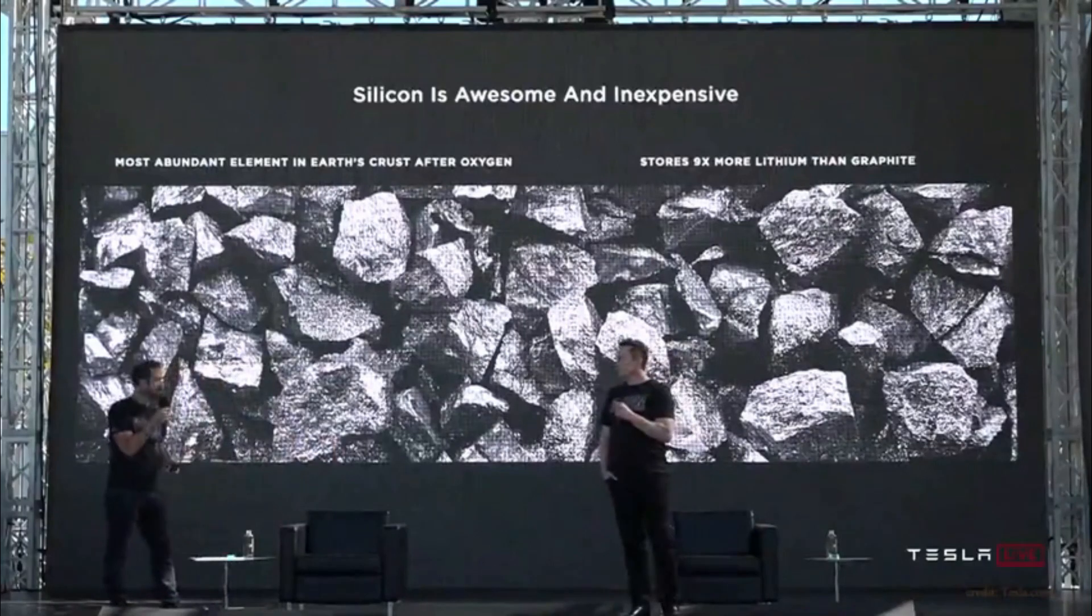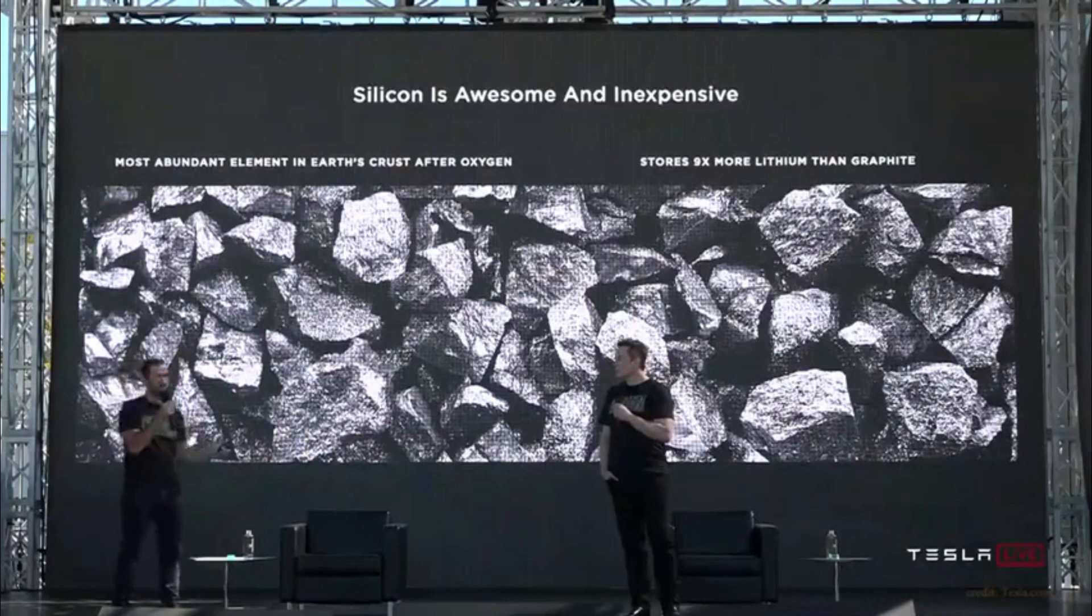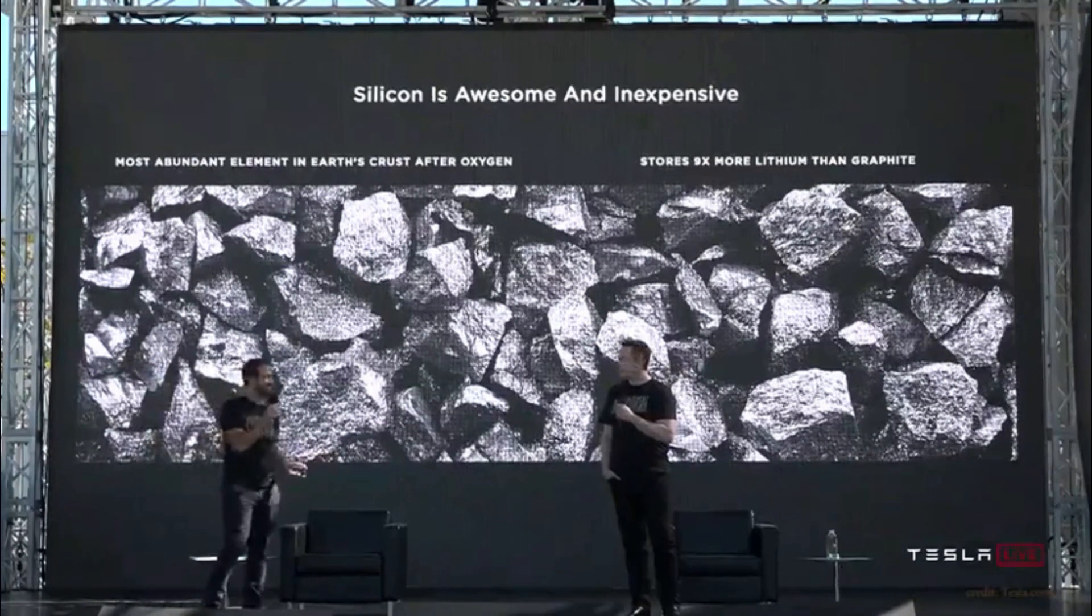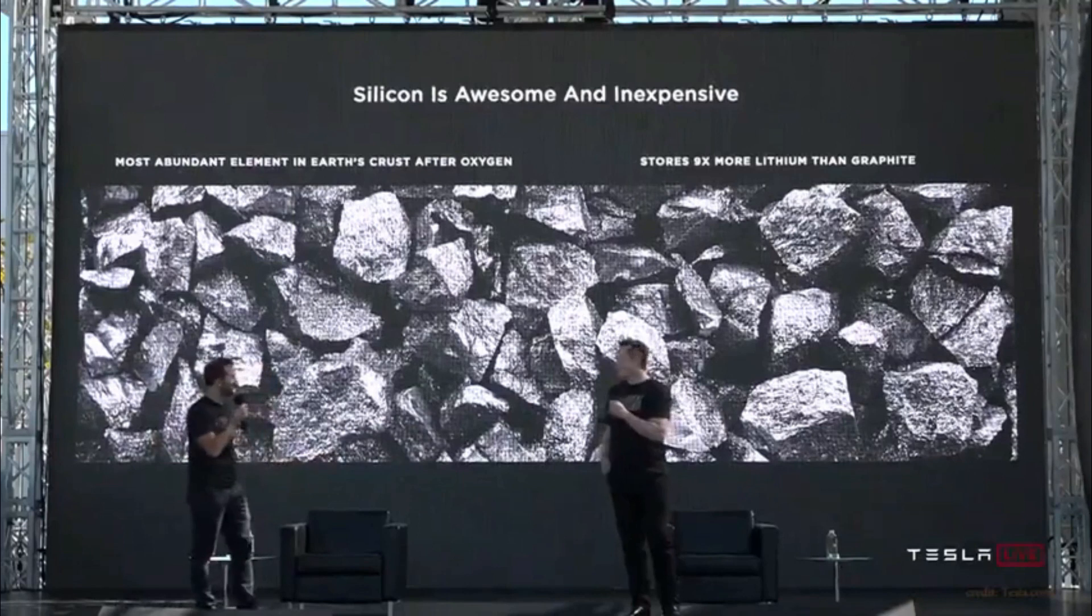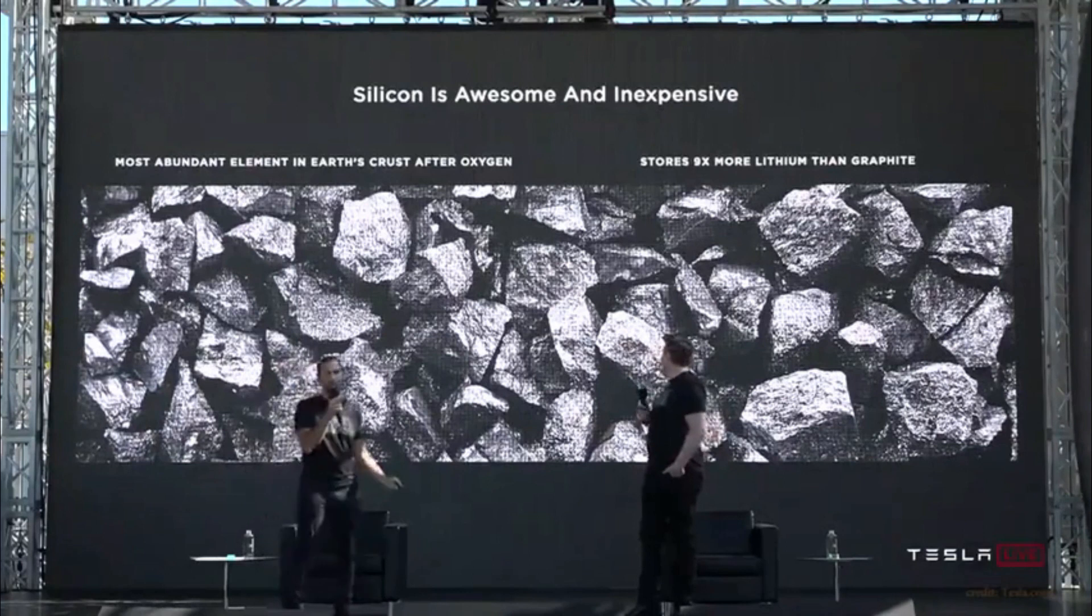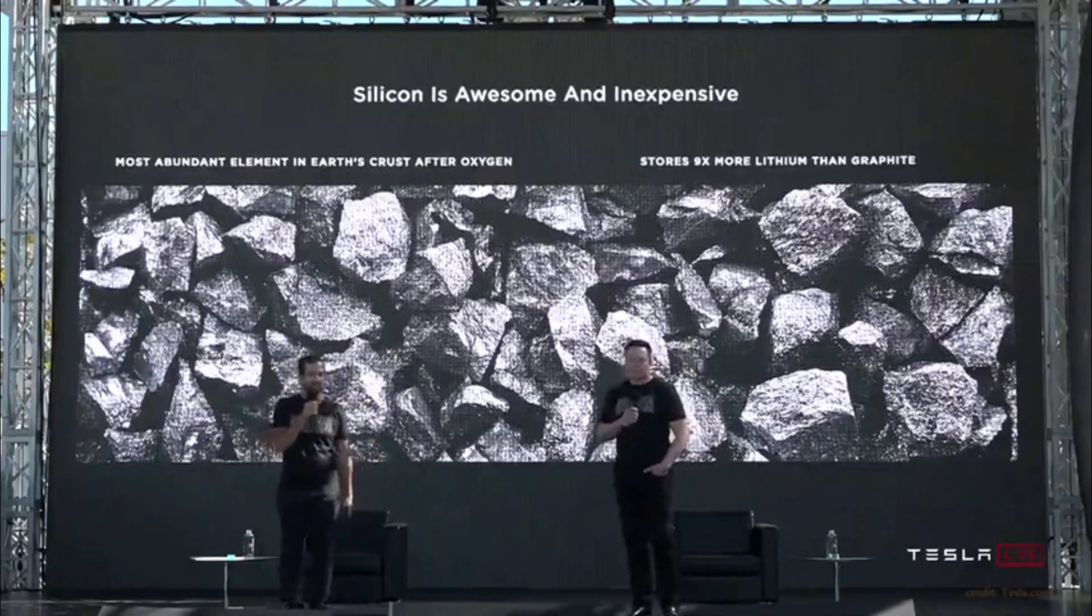Why is silicon awesome? It's awesome because it's the most abundant element in the Earth's crust after oxygen, which means it's everywhere. It's sand. Sand is silicon dioxide. And it happens to store nine times more lithium than graphite, which is the typical anode material in lithium-ion batteries today.